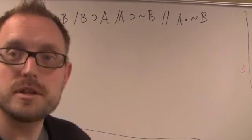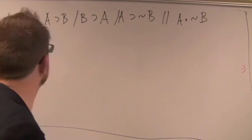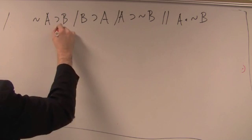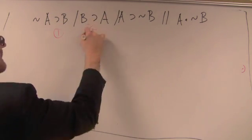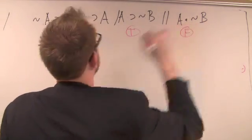Now in order to do the Indirect Truth Method, we have to assume that the premises are true and the conclusion is false. So let's write this in. I'm going to use a red pen just to symbolize that, which means this has to be true, this has to be true, this has to be true, and this has to be false.